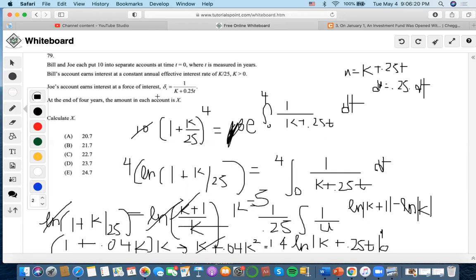Now we need to find X. We can plug K=5 into either equation. This seems to be the easier equation. Let's do 5 divided by 25 is 0.2, plus 1 to the 4th power, times 10. We end up getting 20.73, which is close to option D.